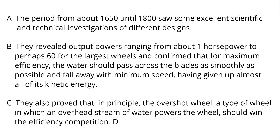A: The period from about 1650 until 1800 saw some excellent scientific and technical investigations of different designs. B: They revealed output powers ranging from about 1 horsepower to perhaps 60 for the largest wheels, and confirmed that for maximum efficiency, the water should pass across the blades as smoothly as possible and fall away with minimum speed, having given up almost all of its kinetic energy. C: They also proved that, in principle, the overshot wheel — a type of wheel in which an overhead stream of water powers the wheel — should win the efficiency competition.